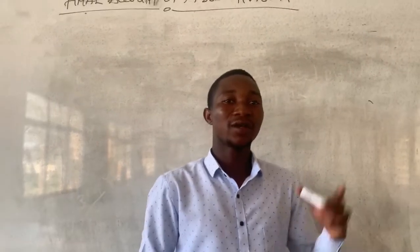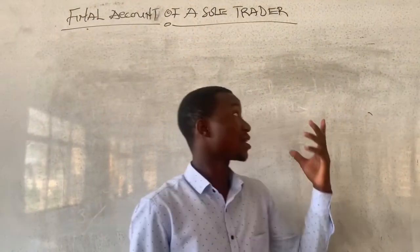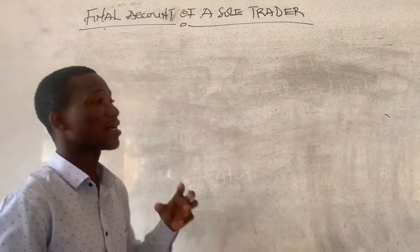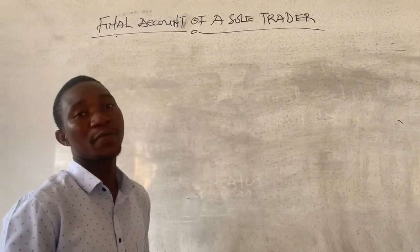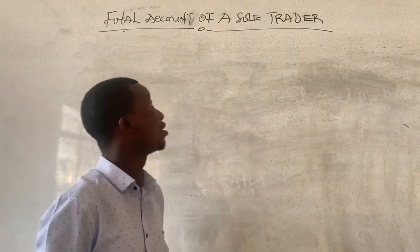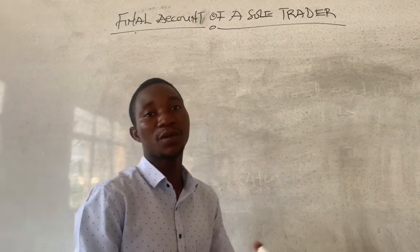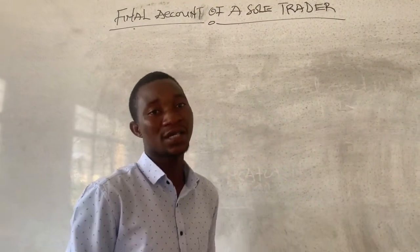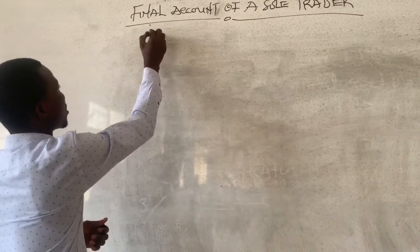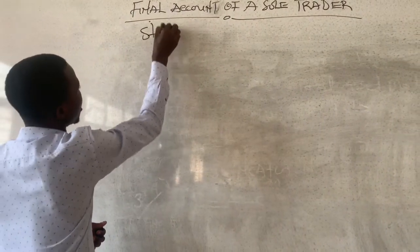We are just continuing from where we ended in Part 1 of this video. In Part 1, we looked at how we prepare an income statement for a sole trader. Today, we are going to look at how the statement of financial position is prepared. So let's quickly look at the format of the statement of financial position.